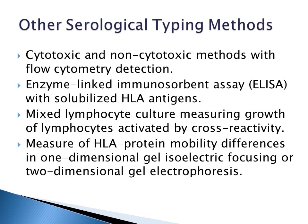Other serological typing methods include cytotoxic and non-cytotoxic methods with flow cytometry detection, enzyme-linked immunosorbent assay or ELISA with solubilized HLA antigens, mixed lymphocyte culture measuring growth of lymphocytes activated by cross-reactivity, and measurement of HLA protein mobility differences in one-dimensional gel isoelectric focusing or two-dimensional gel electrophoresis.